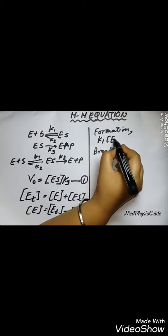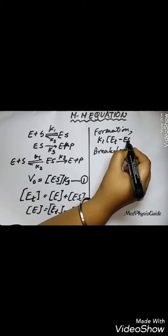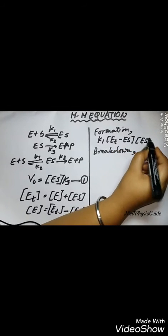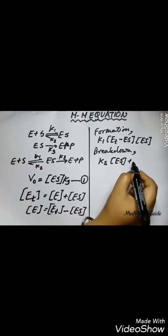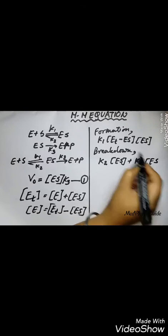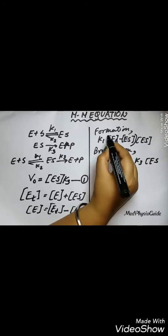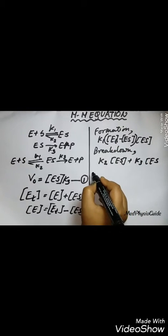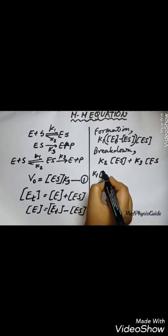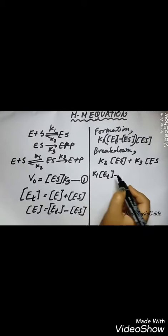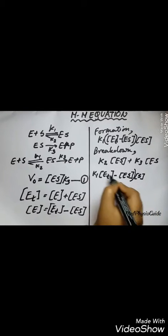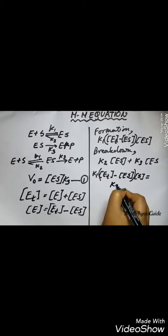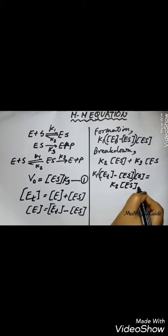With this in mind, the following steps will lead us to the expression for V0 that is easily measured. The rate of ES formation would be the product of the rate constant K1, the concentration of E, and the concentration of S. In the similar way, the rate of ES breakdown would be the sum of K2 times the concentration of ES and K3 times the concentration of ES. For the steady state of an enzyme, both of the equations would have the same value.